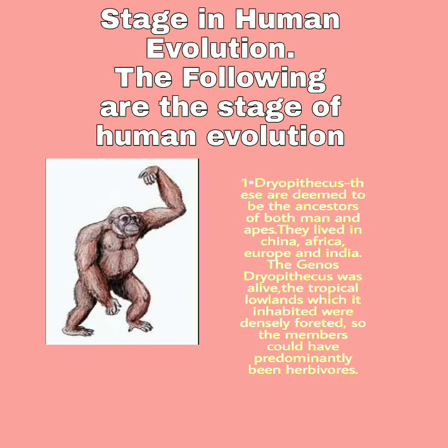The following are the stages of human evolution. First, Dryopithecus. These are thought to be the ancestors of both man and apes. They lived in China, Africa, Europe, and India. The genus Dryopithecus, which lived in tropical lowlands, were distinctly broad. So the members could have been predominantly vine herbivores.